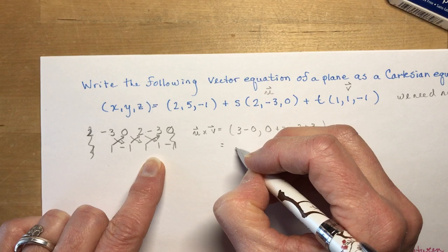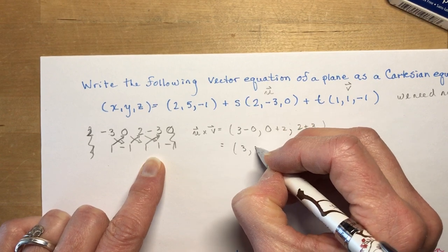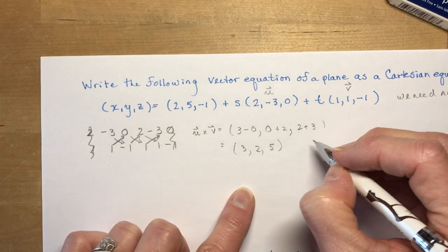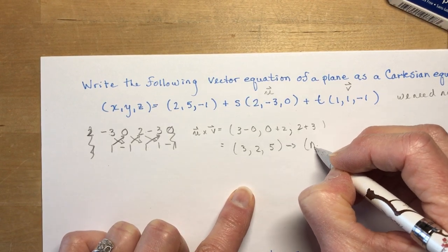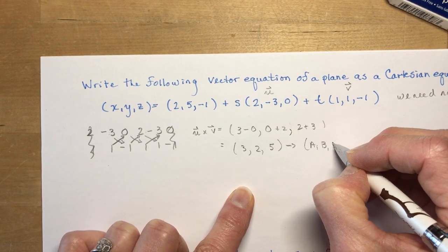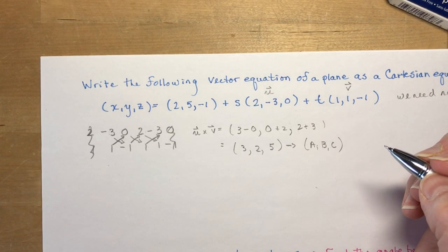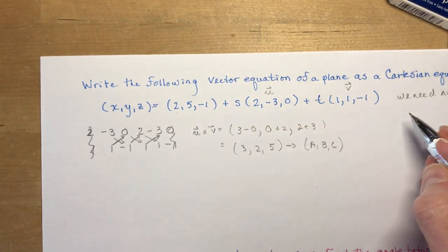And we end up with 3, 2, and 5. So that's my normal vector. And that is A, B, C. So I'm very happy because I have A, B, C. And I have X, Y, Z here.